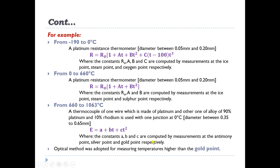For optical methods used for temperature ranges greater than 1063°C — that is, temperatures higher than the gold point — the intensity of radiation at any convenient wavelength is compared with the intensity of radiation of the same wavelength emitted by a black body at the gold point. The temperature is then determined with the help of Planck's law of thermal radiation. This is the method adopted when temperature measurement exceeds 1063°C.